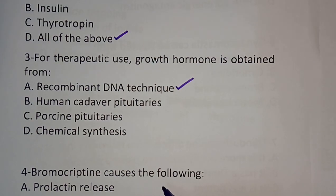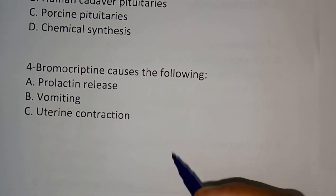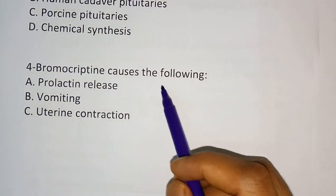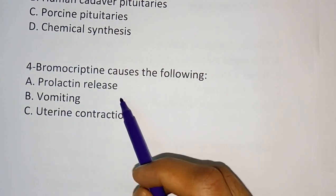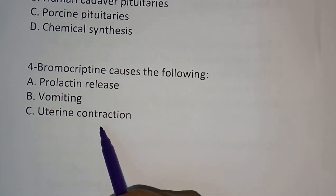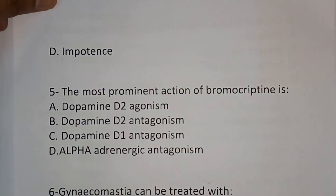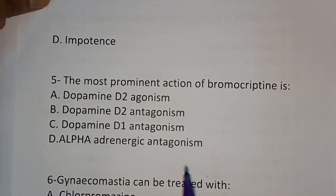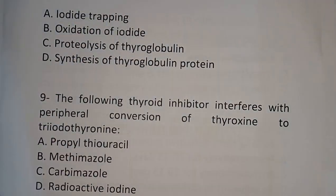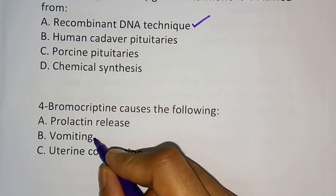Question number four: Bromocriptine causes the following — options are prolactin release, vomiting, uterine contraction, or impotence. The correct answer is vomiting.